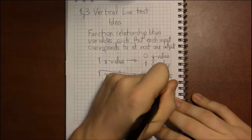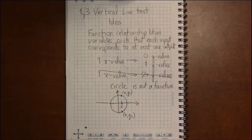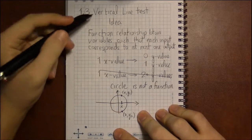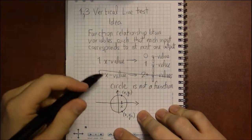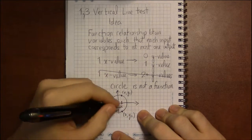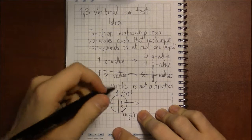And this is the vertical line test. It says, the vertical line test simply says, a graph represents a function if you can never draw a vertical line which crosses the graph more than once.